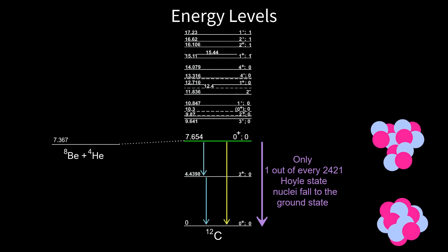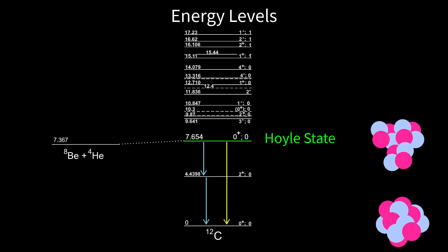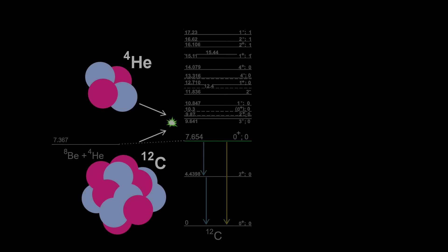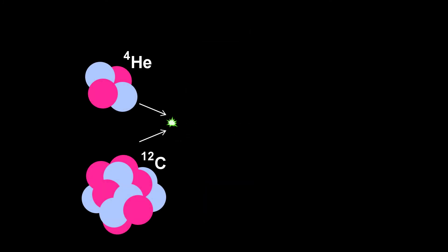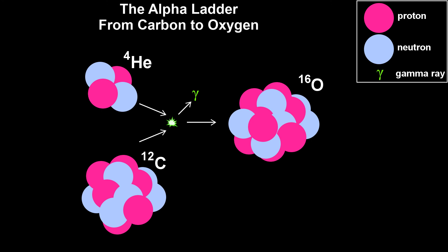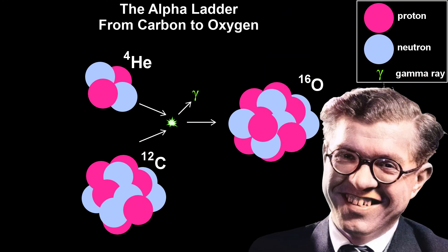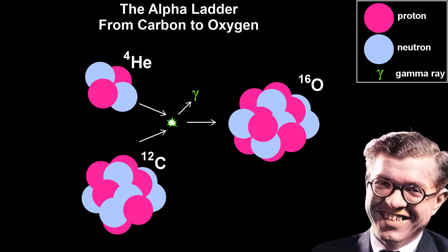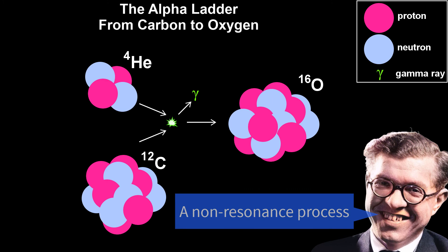Even today, the behavior of the Hoyle state continues to intrigue researchers. Hoyle made another prediction. If an alpha particle adds to carbon, you get oxygen. If this fusion reaction was resonant, nearly all the carbon ever made would have ended up as oxygen. Hoyle said, therefore, that oxygen has no energy levels available for a resonance with carbon and helium. He's been proven correct in this too.